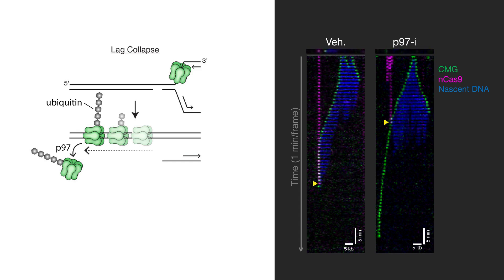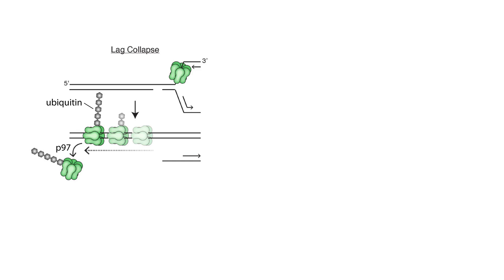In other experiments also in the paper, he found that when the nick is in the other strand—namely in the leading strand template, which is the strand along which CMG actually translocates—then CMG is also lost from the DNA. That makes sense because CMG simply flies off the end of the broken strand.